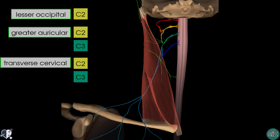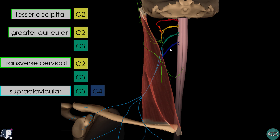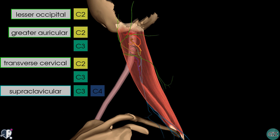The fourth group of nerves are the supraclavicular nerves, formed from the roots of C3 and C4. They pass behind the sternocleidomastoid muscle and provide sensation to the skin overlying the suprascapular fossa, the upper thoracic region and the sternoclavicular joint. To recap from a lateral view: the lesser occipital nerve originates from C2; the greater auricular nerve from C2 and C3; the transverse cervical nerve, which winds around anteriorly, from C2 and C3; and the supraclavicular nerves from C3 and C4.